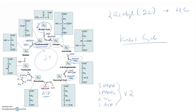Multiplying by two for a full glucose molecule, the Krebs cycle yields: six NADH, two FADH₂, four CO₂, and two ATP. At this point, all six carbons of glucose have been completely oxidized into CO₂ — two were oxidized in the prep step, and the remaining four have now been oxidized through the Krebs cycle.